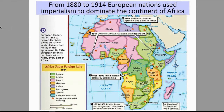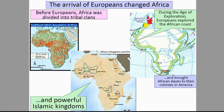From 1880 to 1914, European nations used imperialism to dominate the continent of Africa. The arrival of Europeans changed Africa. Before Europeans, Africa was divided into tribal clans and powerful Islamic kingdoms. During the Age of Exploration, Europeans explored the African coast and brought African slaves to their colonies in America.